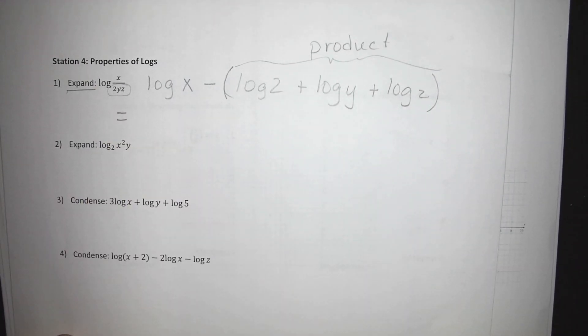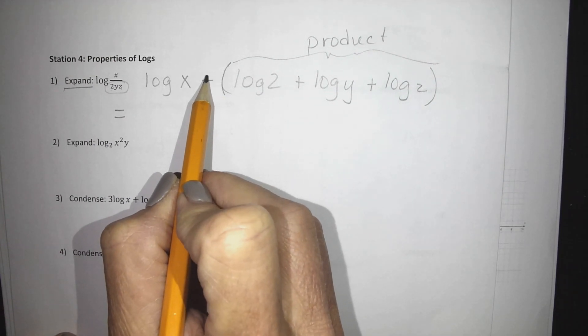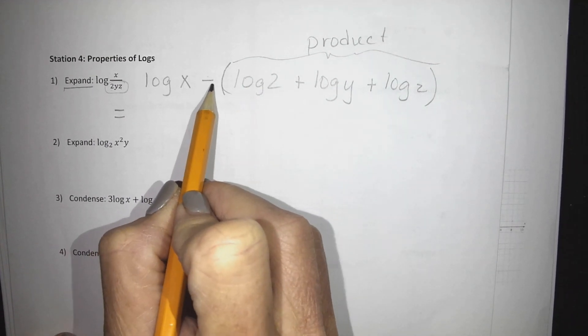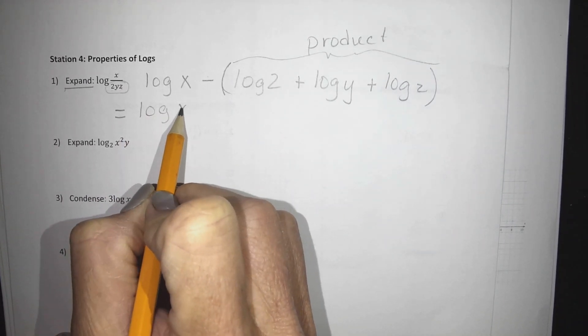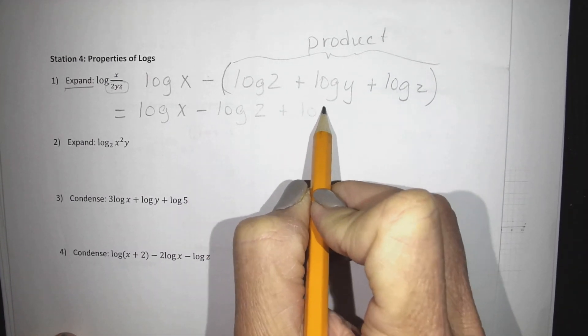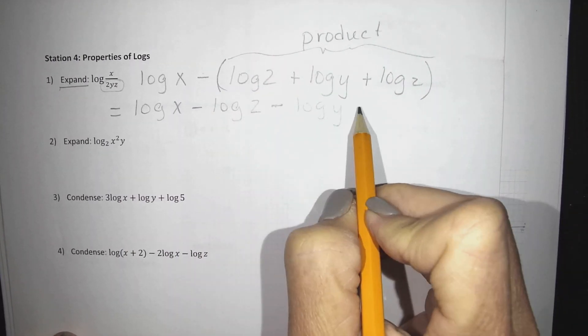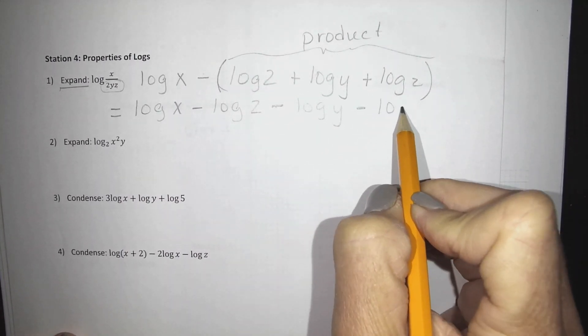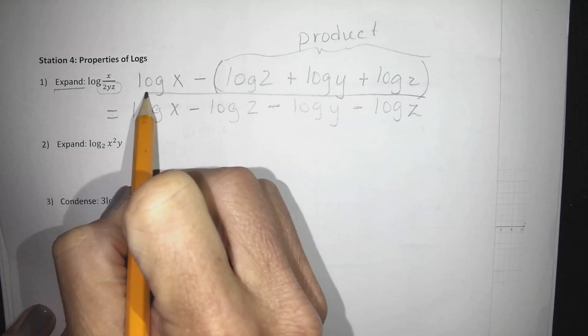Now your final answer, this is where it's kind of a new concept. What is distributed here, do you see this? So your final answer will look like this: log x minus log 2 plus log y, nope sorry, minus minus log z and I'm gonna box it.